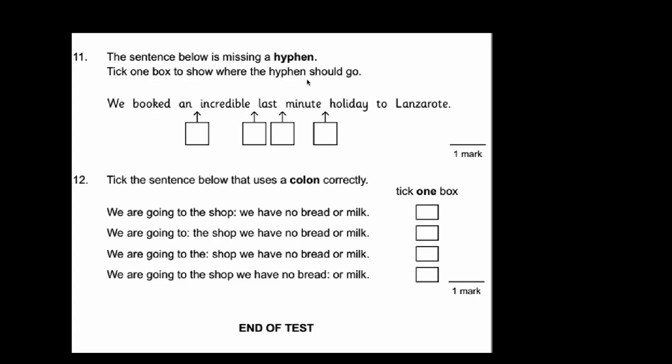Okay the last two questions. The sentence below is missing a hyphen. Tick one box to show where the hyphen should go. We booked an incredible last minute holiday to Lanzarote. So the hyphen is going in there to join two words together that describe a noun. If we look at 'last minute', well that is a word in itself effectively. A last-minute holiday. So that hyphen is there to use this as one big adjective describing this noun 'holiday'. So the correct answer is here.